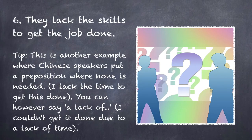Sentence number six: They lack the skills to get the job done. This is another example where Chinese speakers put a preposition where no preposition is needed. I lack the time to get this done. You can, however, use 'of' with 'lack' if 'lack' is not the verb — 'a lack of.' For example: I couldn't get it done due to a lack of time.